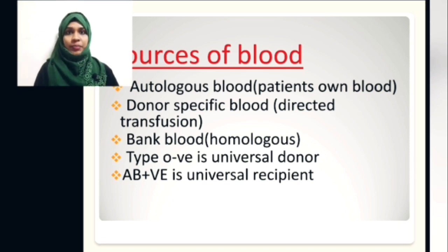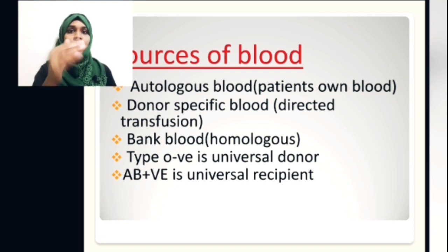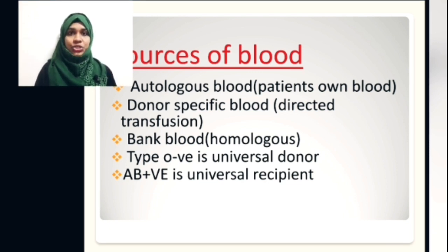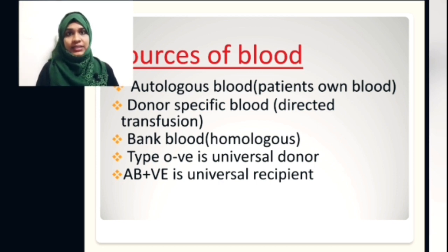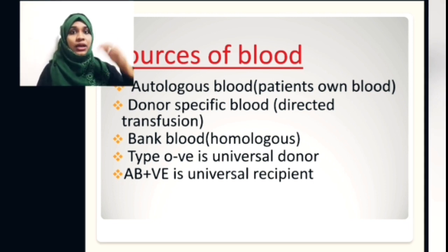Directed transfusion or donor-specific transfusion means the patient designates a person from his family or friend group to donate blood. ABO compatibility must be confirmed. The designated donor should meet all eligibility criteria: age between 18 to 45 years, hemoglobin level from 13 gram per deciliter, no blood donation within the prior 19 days, and no vaccines or antibody therapies in the last 19 days. Homologous means blood donated by the general public to the blood bank, from which it is chosen for transfusion.